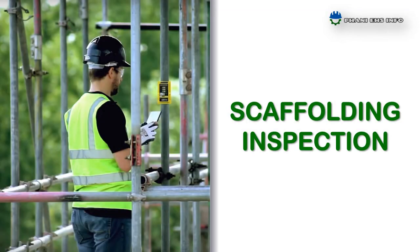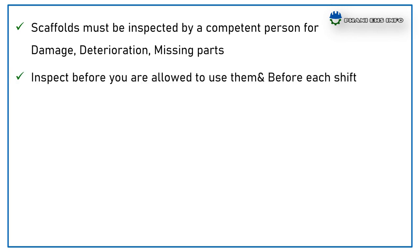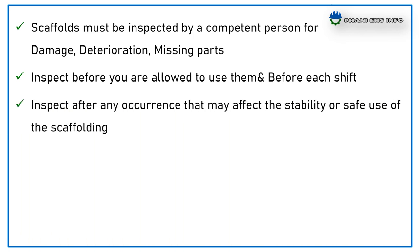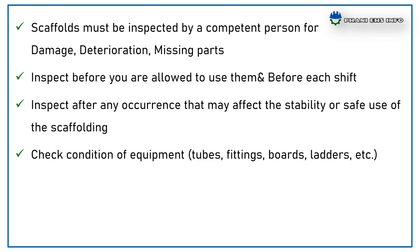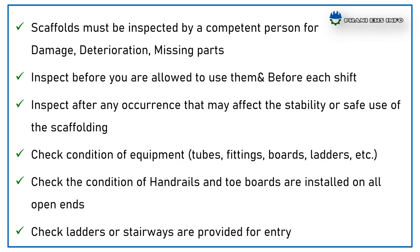How to inspect a scaffold? The scaffold must be inspected by a competent person for damage, deterioration and missing parts. Inspect before you are allowed to use them and before each shift. Inspect after any occurrence that may affect the stability or safe use of scaffolding. Check the condition of equipment: tubes, fittings, boards, ladders, etc. Check that handrails and toeboards are installed on the open ends. Check that ladders or stairways are provided for entry.